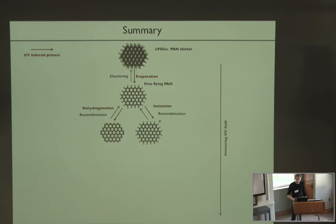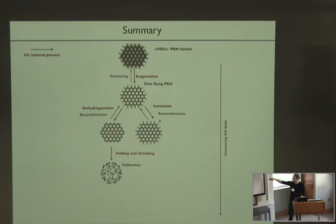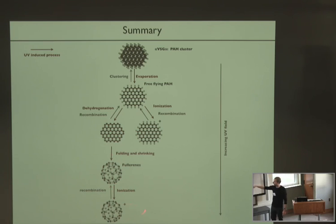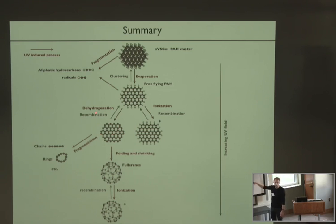Upon further irradiation you can either ionize the molecule or dehydrogenate it. If you continue with an even stronger UV field, you will fold this dehydrogenated PAH into a fullerene cage, and then the dead end—the furthest you can go—seems to be the ionized fullerene C60+. In addition there are many other things happening: you can fragment these species into aliphatic hydrocarbons or radicals, and these graphene flakes—particularly the smaller ones—will fragment.